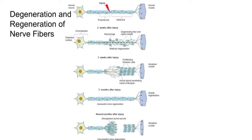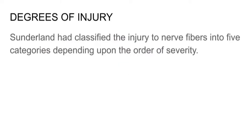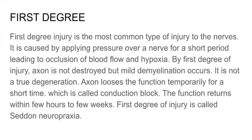Seddon has classified injury of nerve fibers into five categories depending upon the degree of severity. First degree injury is the most common type of injury to the nerves. It is caused by applying pressure over a nerve for a short period, leading to occlusion of blood flow and hypoxia.